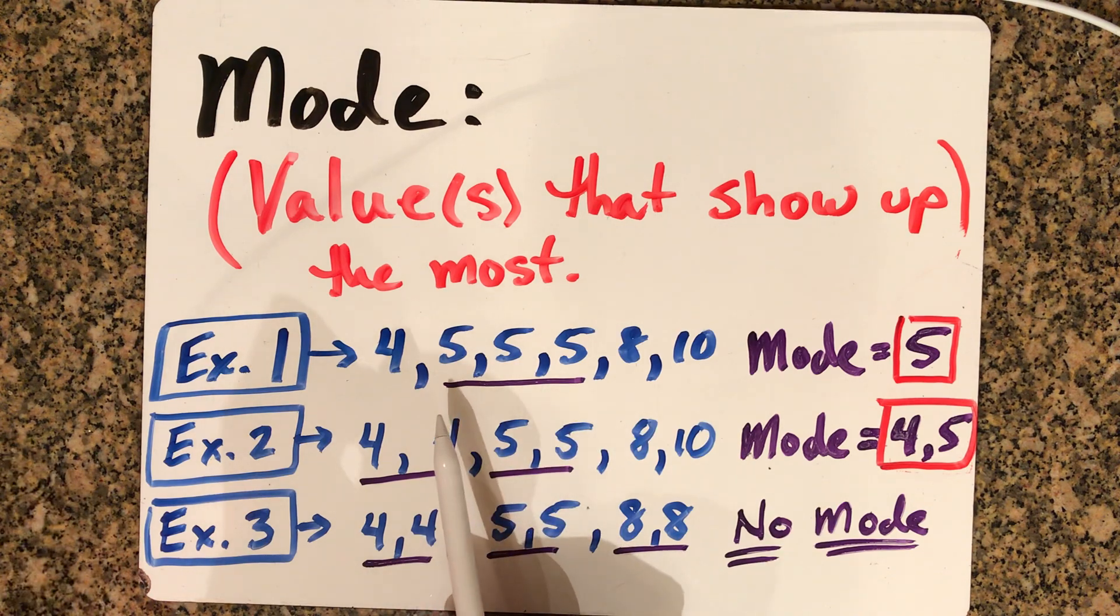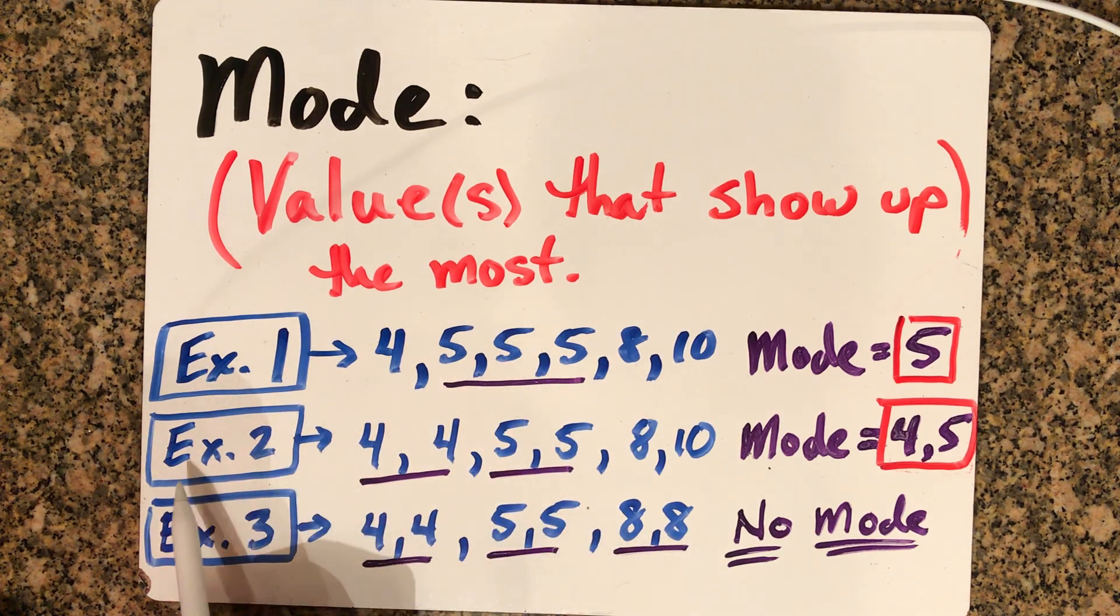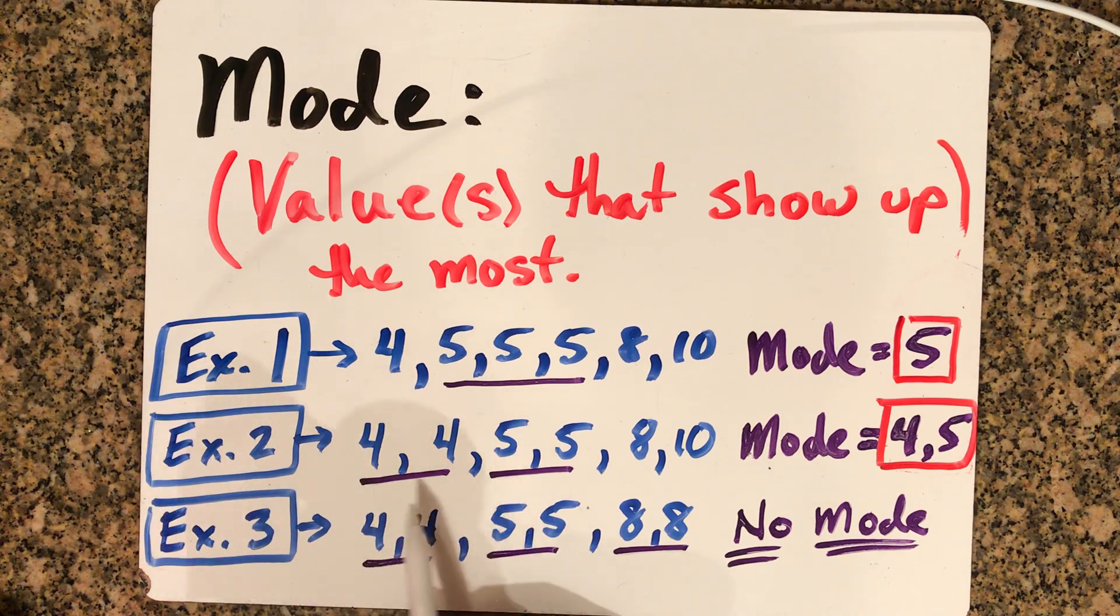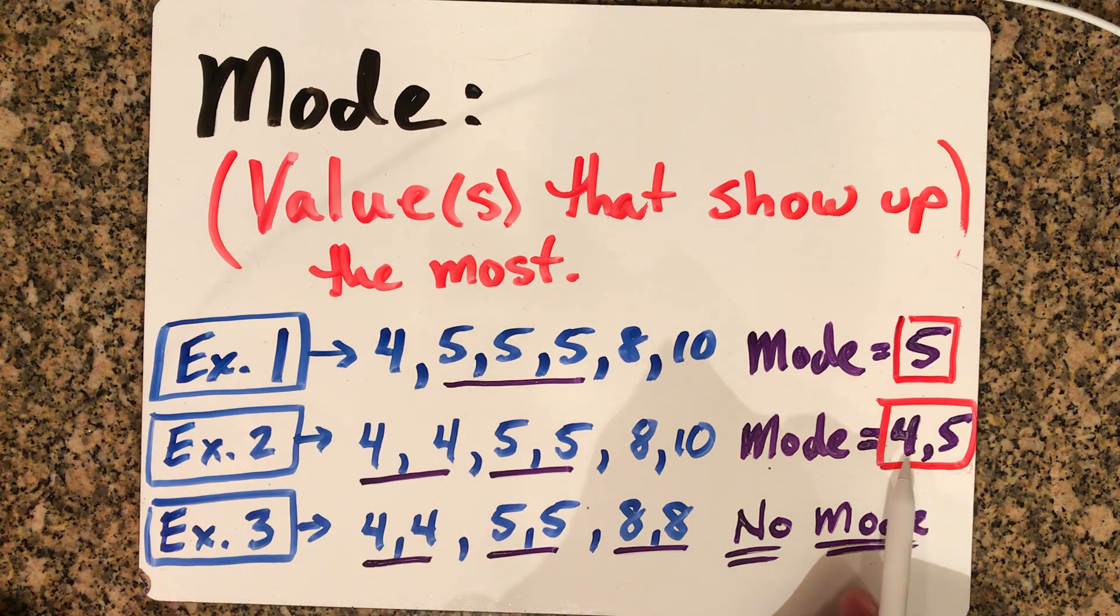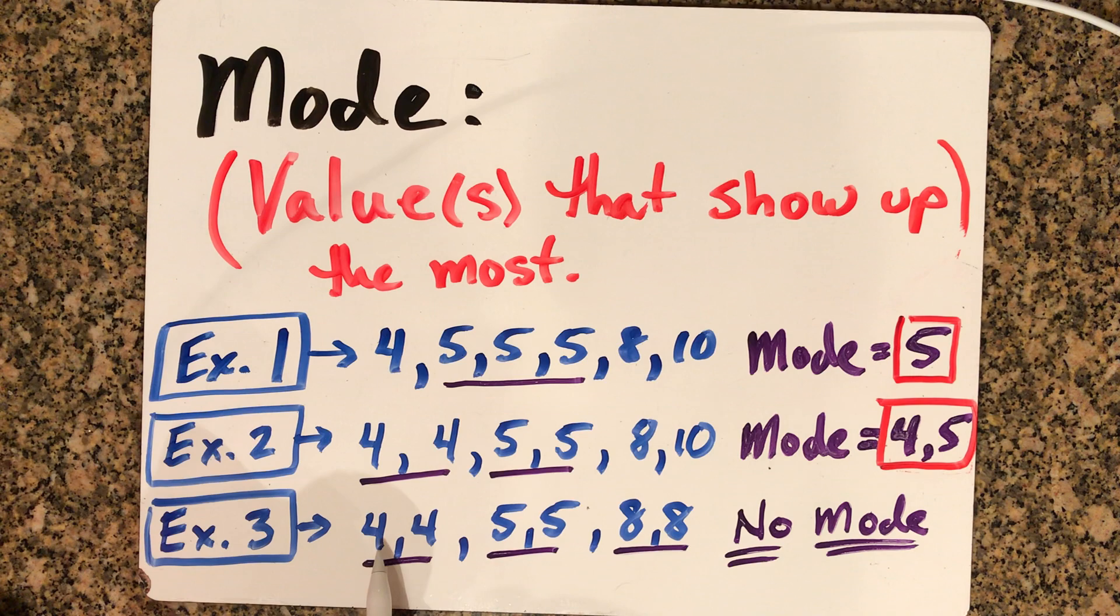If you saw it in a histogram or dot plot, you'd see a big peak at five. In the next example where four and five both appear most often, if you have a tie for the most, both get listed as winners. If all data points are tied, or if no data values repeat, then there would be no mode. So mean, median, and mode can be represented in three different ways, and now you've seen all three.